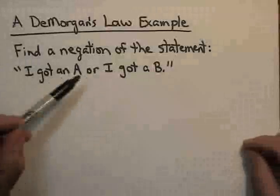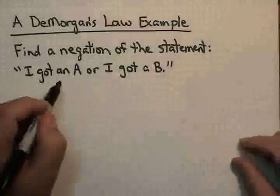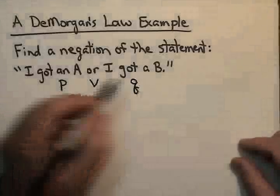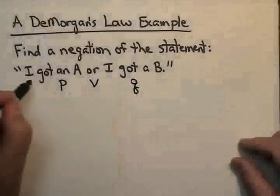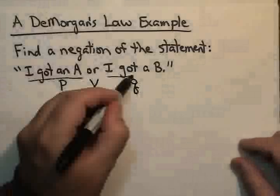Now, this is a disjunction of two statements. This is like P or Q, where this is statement P, I got an A, and this is statement Q, I got a B.